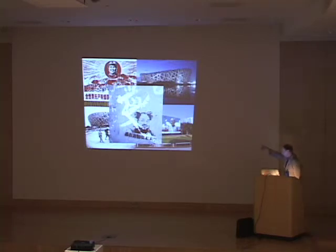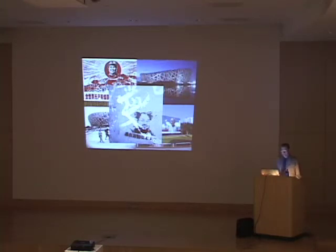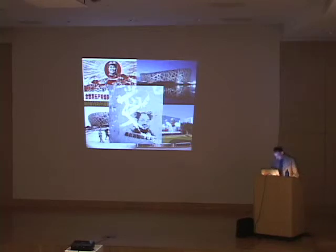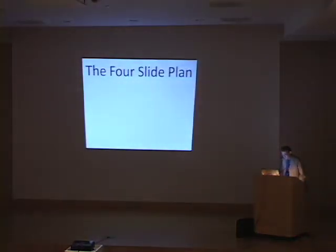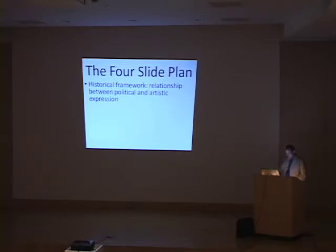Interestingly, she spray painted over earlier graffiti — you see the character for Ai, meaning love — so it's part of a larger piece of graffiti but also transposes this wonderful image. Maybe this is Ai Weiwei the Daoist or the Buddha, as Suzanne was talking about. I'm going to give you a little sketch — a four-slide plan: the historical framework, the relationship between political and artistic expression, Ai Weiwei himself, and then some of his fellow intellectuals in context.